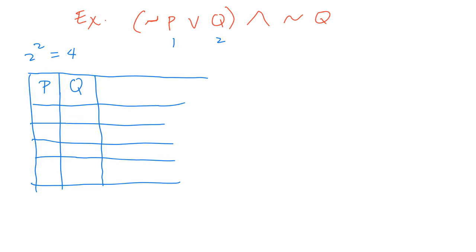Start filling in inputs: the second column starts with T and alternates T, F, T, F. On the first column, start with T, two T's, then two F's. Then evaluate what's inside the parenthesis first — the inner part would be not p, so we will create a column for not p.